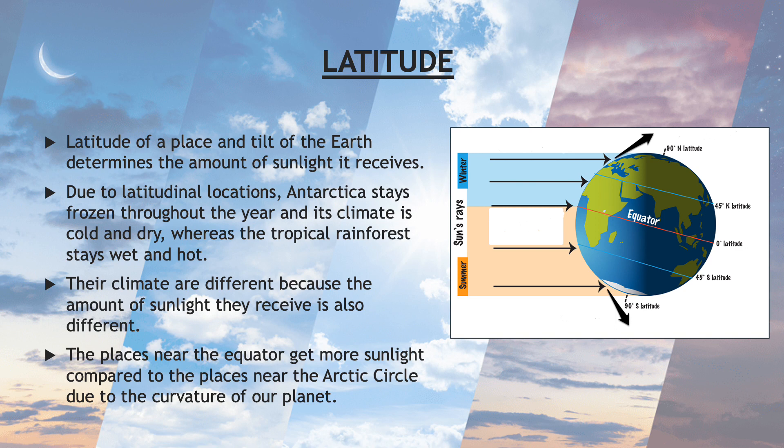Their climates are different because the amount of sunlight they receive is also different. The places near the equator get more sunlight compared to the places near the arctic circle, due to the curvature of our planet.